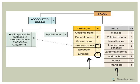For the associated bones, you only have one hyoid bone and a total of six auditory ossicles, because you have three within each inner ear.